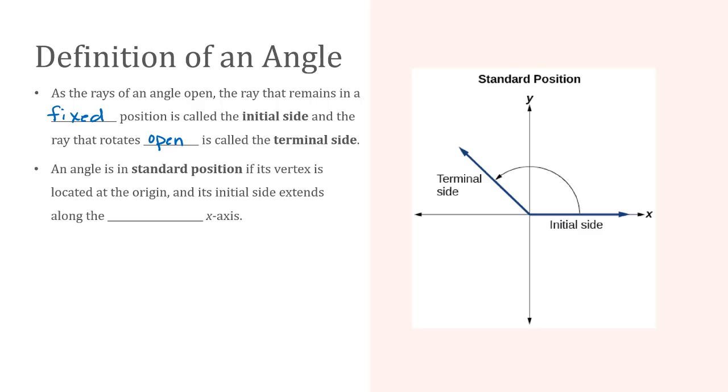Now, if an angle is in standard position, then its vertex is located at the origin, and its initial side extends along that positive x-axis. So that's what we have here.